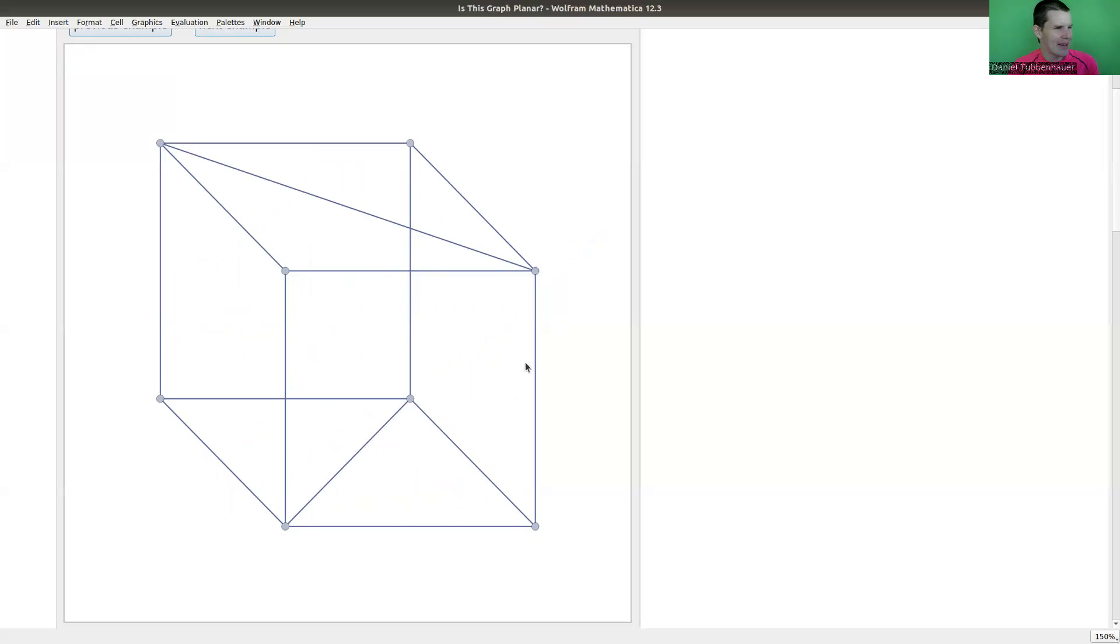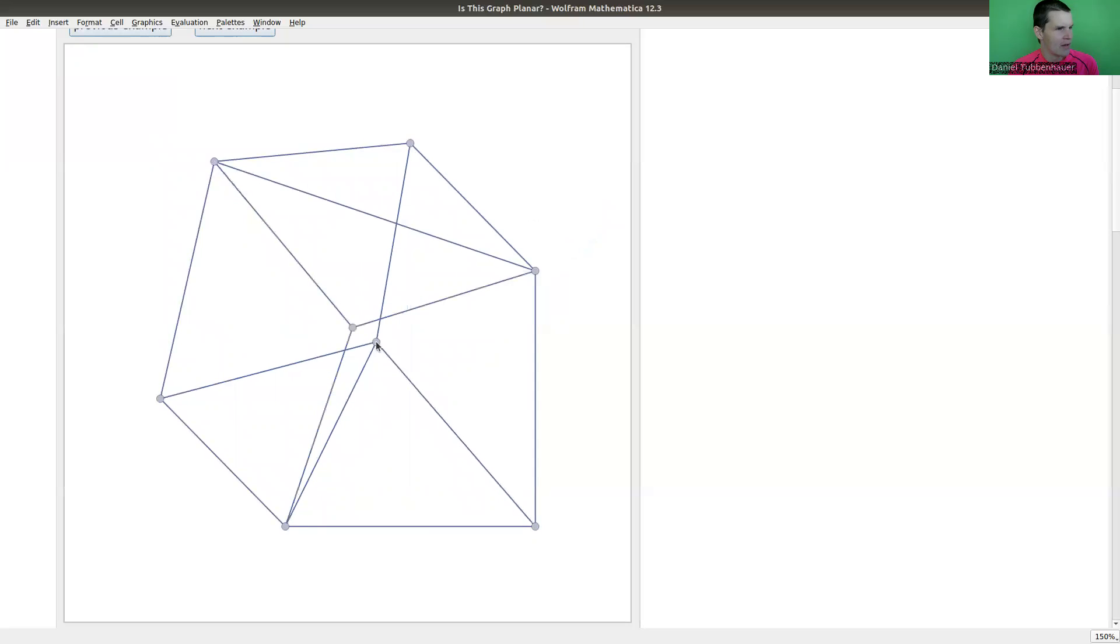This might be planar. So let's see what we can do here. Maybe we want to those two vertices appear to be the problem here. So maybe I put one of them on the outside. We'll see. Oh, yeah. So okay.